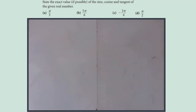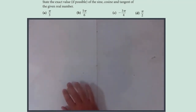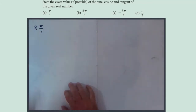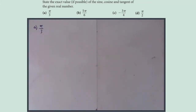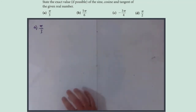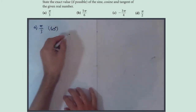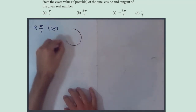Find the exact value of the sine, cosine, and tangent of the given real number. The first number is π/3. I like to always think of it in degrees as well — π is 180, so π/3 must be 180 divided by 3, which is 60 degrees.